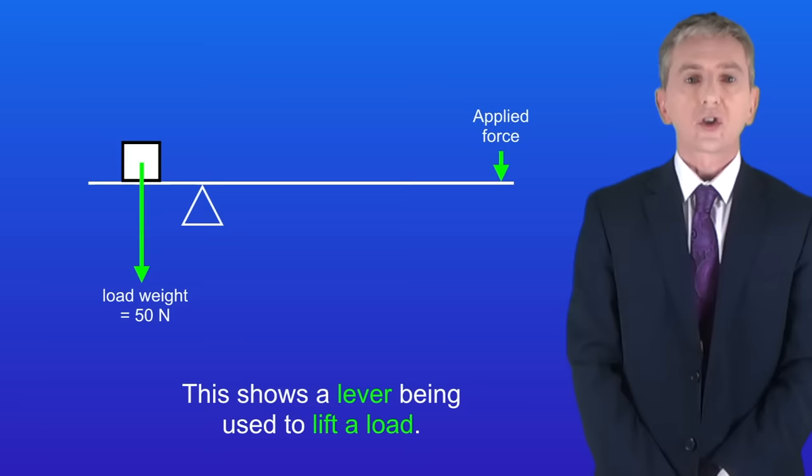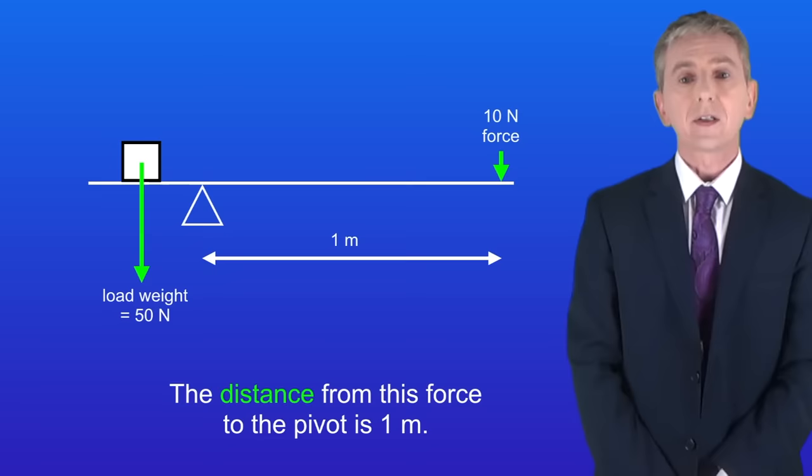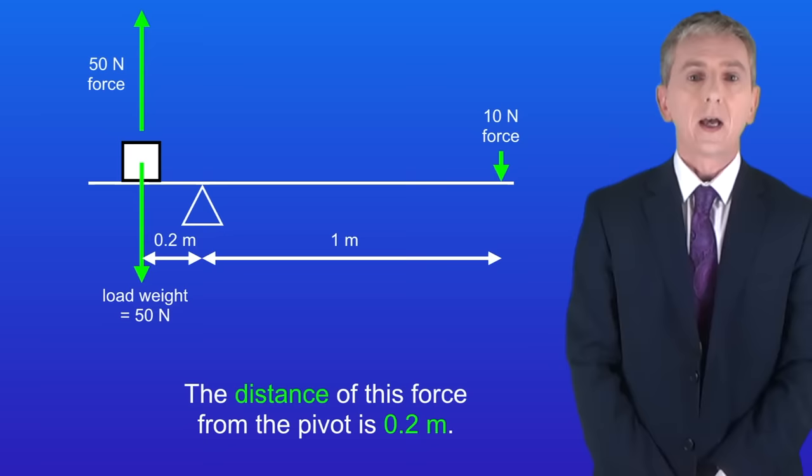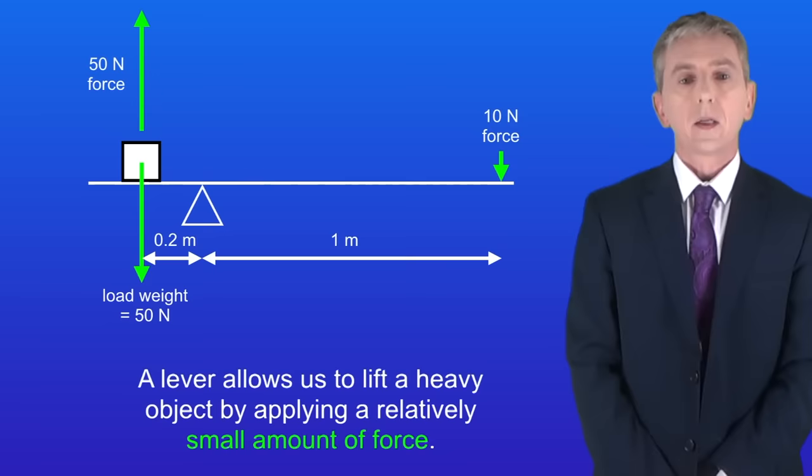I'm showing you here a lever being used to lift a load. We're applying a force of 10 newtons to the right hand side, and the distance from this force to the pivot is one meter. On the left hand side we've got a lifting force of 50 newtons, and the distance of this force from the pivot is 0.2 meters.